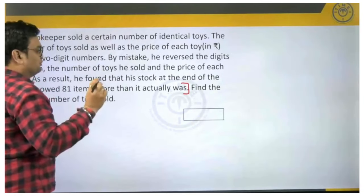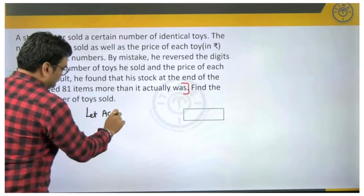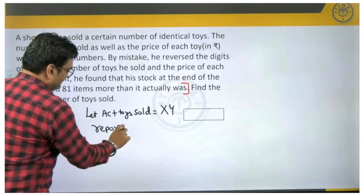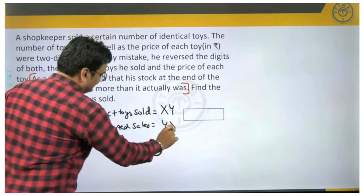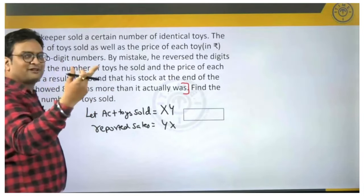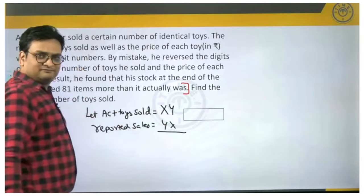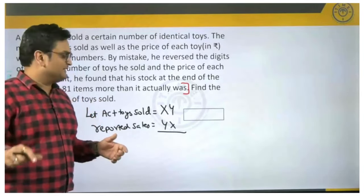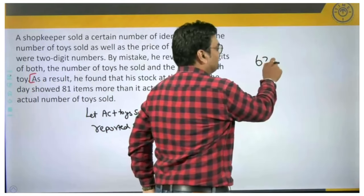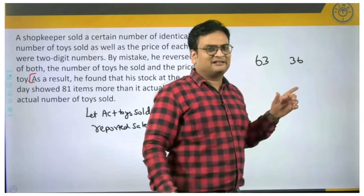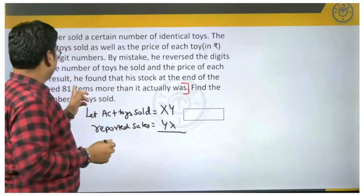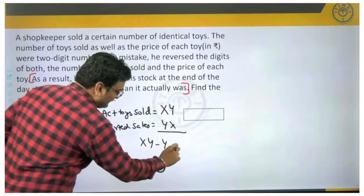He says that the number of toys sold was a two digit number. Let us say the actual toys sold was some xy, a two digit number. That means, what will be reported sales? It is going to be yx. And as we have seen already, difference between the stock shown, for example he says he found that his stock at the end of the day showed 81 items more than what it actually was. Can I say that 81 should be nothing but difference between these two? And if the stock is showing 81 more, that means the actual sales should have been higher than the reported sales. Basically when he says the stock showed 81 items more, that means the difference between these two, xy minus yx, should be equal to 81.